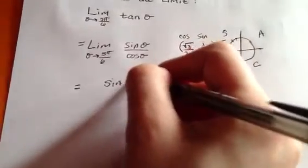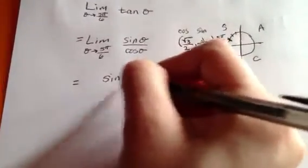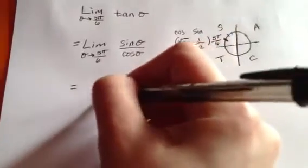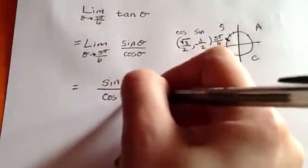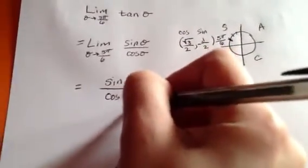Sine 5 pi over 6 over cosine 5 pi over 6.